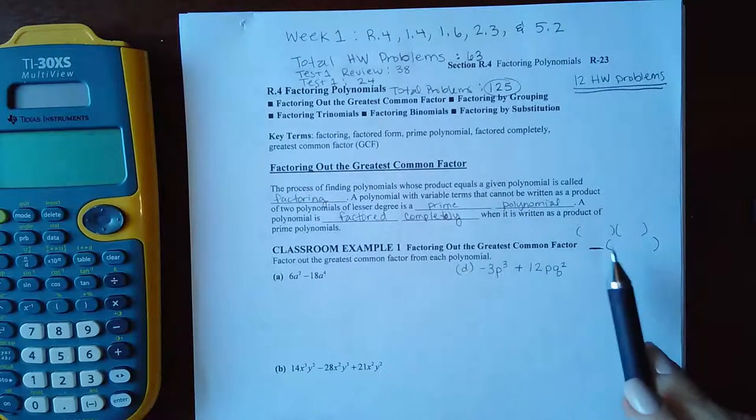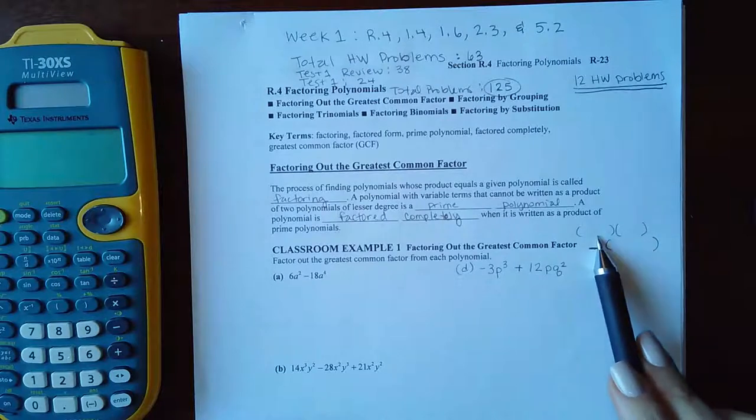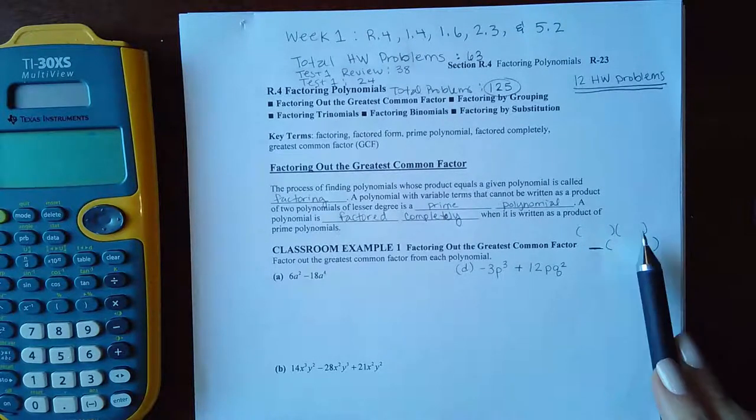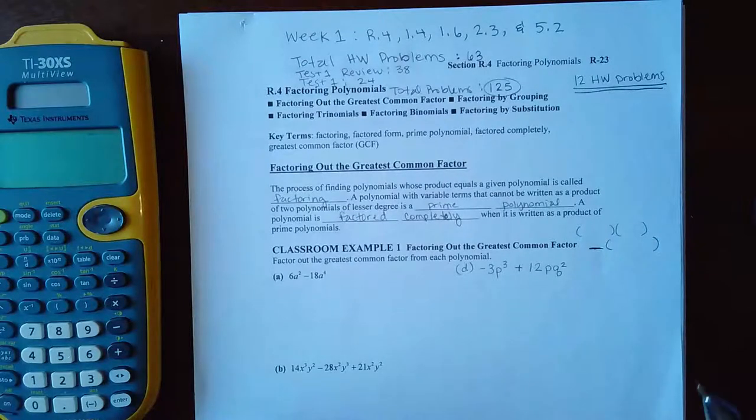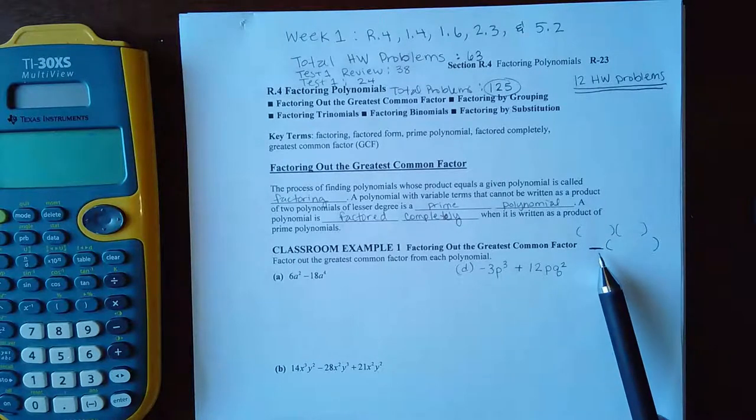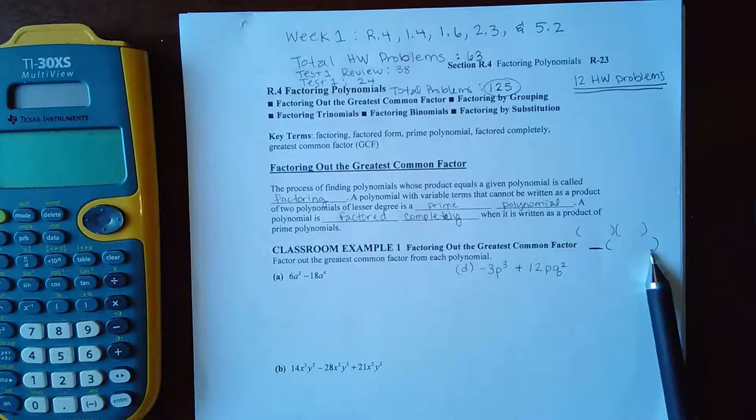Even if all I have is a monomial, which means one term, times a polynomial with more terms. So these could both be polynomials, binomial, binomial, trinomial. It doesn't matter how many terms they got. But if you've got polynomial here, polynomial there, or a monomial times a polynomial.